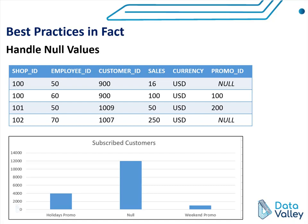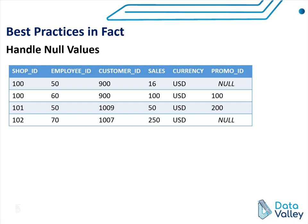When you deliver such a report to a decision maker or an executive, they may not understand what null value means, because null is a technical term. When presenting a report showing KPIs, you need to make sure that all terms in the report or dashboard are business terms. So in this case, we need to replace the null value and put a default value for this promo code, in case the purchase operation has no promo code.